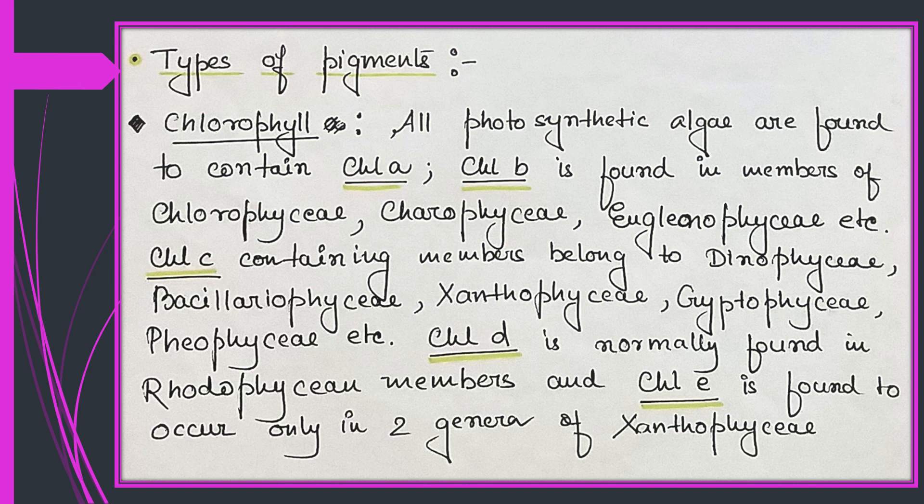Chlorophyll d is found in Chlorophyceae members, and chlorophyll e is found to occur only in two genera of Xanthophyceae.